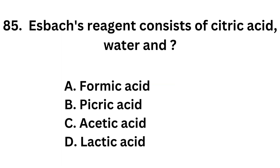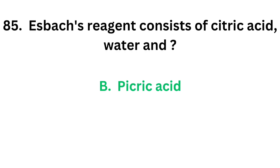Question number 85. X-BACS reagent consists of citric acid, water, and: Option A: Formic acid. Option B: Picric acid. Option C: Acetic acid. Option D: Lactic acid. The correct answer is option B, picric acid. X-BACS reagent consists of citric acid, water, and picric acid.